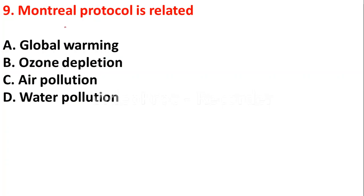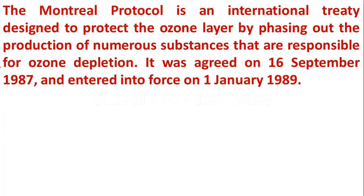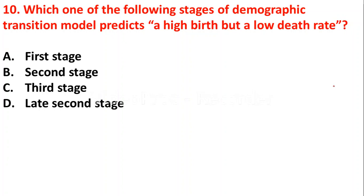Question 9: The Montreal Protocol is related to: option A - global warming; option B - ozone depletion; option C - air pollution; option D - water pollution. The Montreal Protocol is related to ozone depletion. It is an international treaty designed to protect the ozone layer by phasing out production of substances responsible for ozone depletion. It was agreed on 16 September 1987 and entered into force on 1 January 1989.